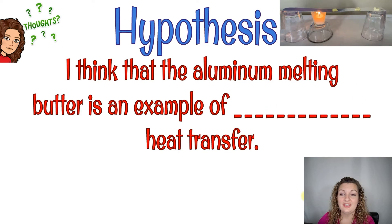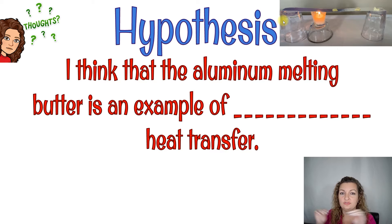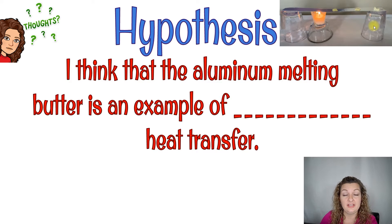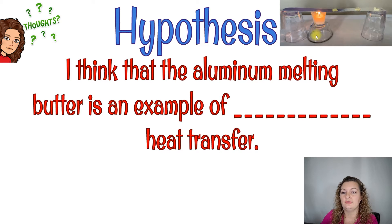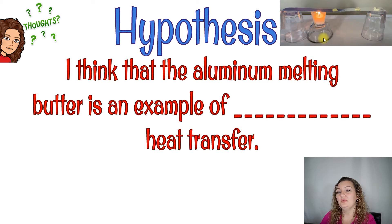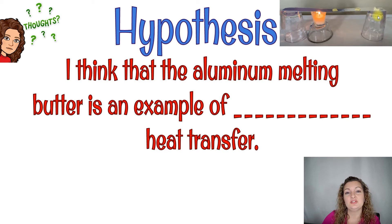So the next part of this lab is to take two little cups or some kind of stand, put a strip of aluminum foil across it — I've folded it into several pieces to make it extra strong. I put a couple little tabs of butter across it, all pretty much equal size. Then I'm going to light a candle and prop it up. The closer the flame is to the aluminum foil, the faster your lab will go.